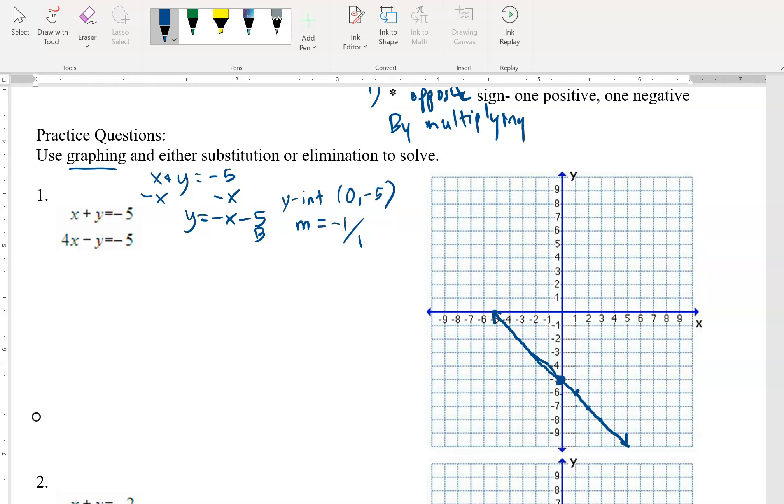Second equation. We have 4x minus y equals negative 5. Moving the x. I have, don't forget this is negative y equals negative 4x minus 5. And last but not least we divide by negative 1 and get y is equal to 4x plus 5. So this 4 becomes positive. This 5 becomes positive. So this has a y intercept of 5, 0 comma positive 5, and a slope of 4 or 4 over 1.